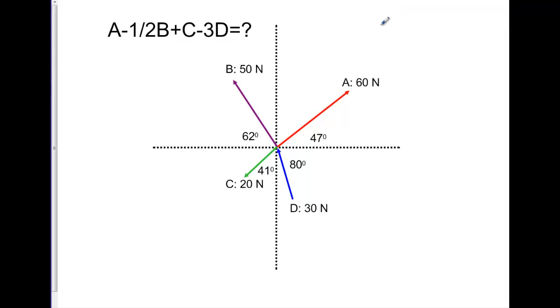This is Dr. Holt. I want to go over how to add vectors when you have different coefficients other than just one. In this case, we have A minus one-half B plus C minus 3D.